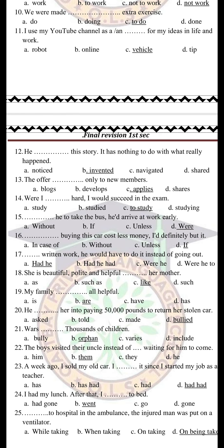Number 17: 'Written work — space — he would have to do it instead of going out.' Here 'written' is not a past participle verb — it is an adjective in the past participle form. In the third conditional, we can put 'had' instead of 'if.' So the right answer is 'had he.' We say 'had he had written work' because 'written' is an adjective. The right answer is 'had he,' not any other form.